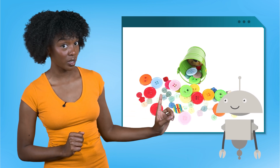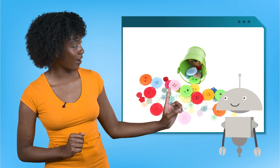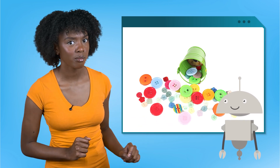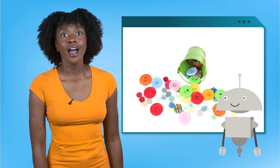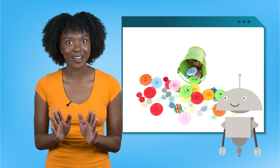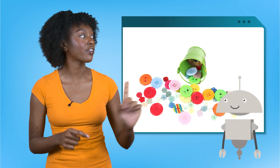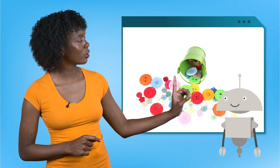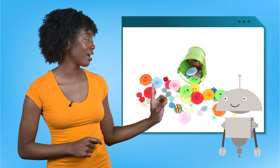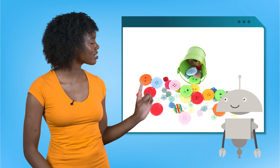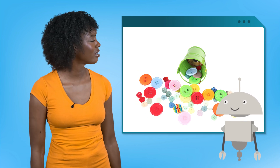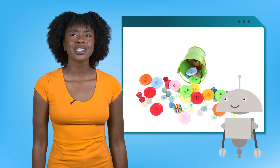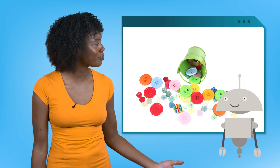One, two, three, four, five, six. I skipped one? Okay, I've got it this time. I'll start counting from this side instead. One, two, three, four, five, six, seven. Mia, this is taking a while. There has to be a quicker way to count these buttons.